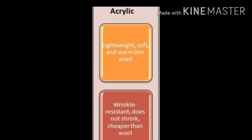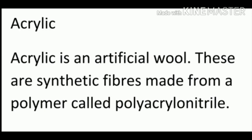Acrylic polymer is light, white, soft, and warm like wool. It is also wrinkle resistant, does not shrink easily, and is cheaper than wool. That's why we call acrylic fiber artificial wool. Just as rayon is called artificial silk, acrylic is called artificial wool. Acrylic is a synthetic fiber made from a polymer unit called polyacrylonitrile.